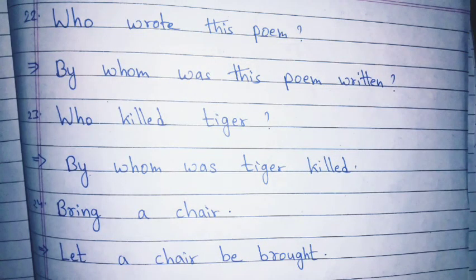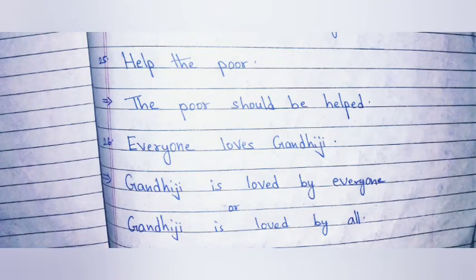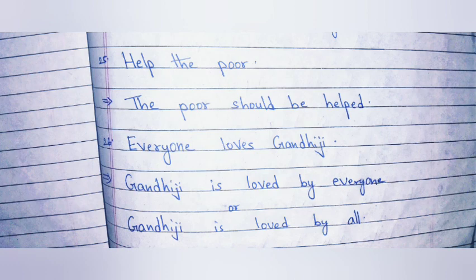Who wrote this poem? By whom was this poem written? Who killed Tiger? By whom was Tiger killed? Bring a chair — let a chair be brought. Help the poor — the poor should be helped. Everyone loves Gandhiji — Gandhiji is loved by everyone, or Gandhiji is loved by all.